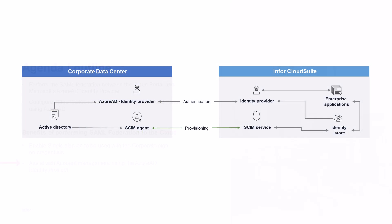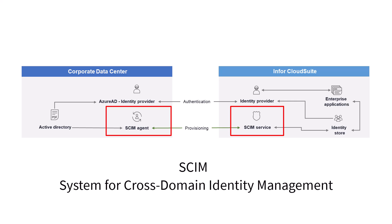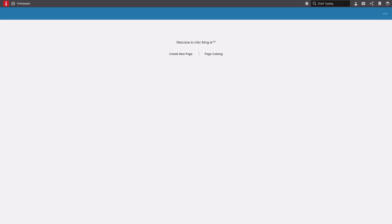Here is a diagram showing the high-level architecture of what will take place, federating the Infor Cloud Identity Provider and Azure AD. There is also an option to automate user provisioning using SCIM or System for Cross Domain Identity Management. This will be covered in future videos. Let's get started.